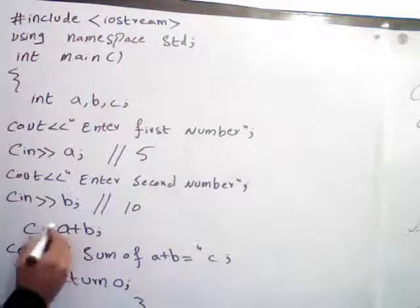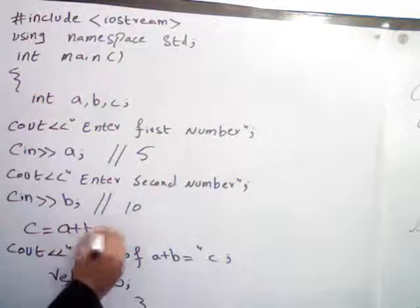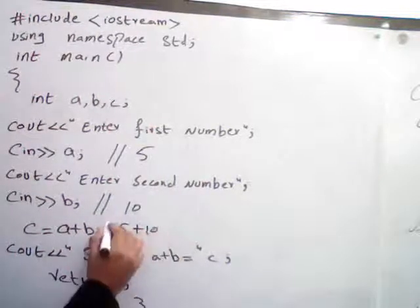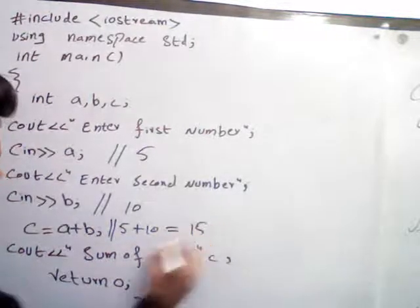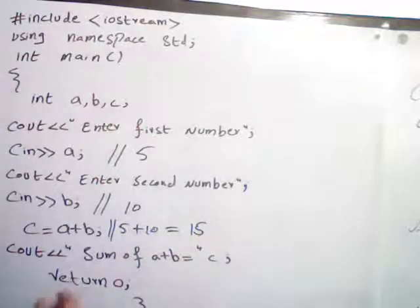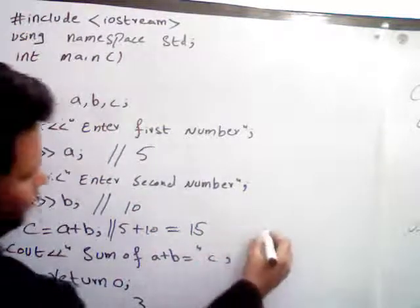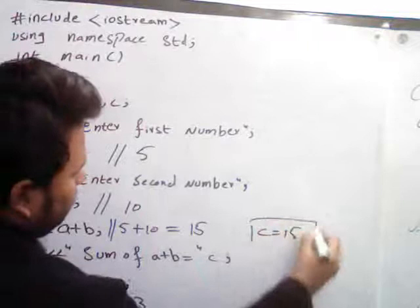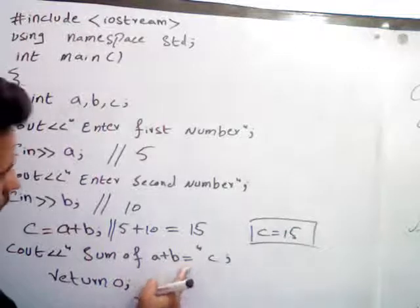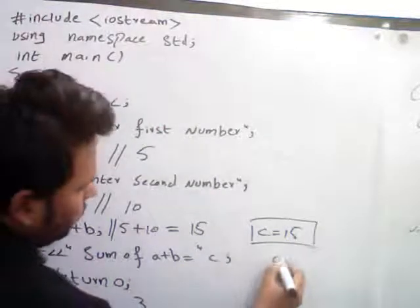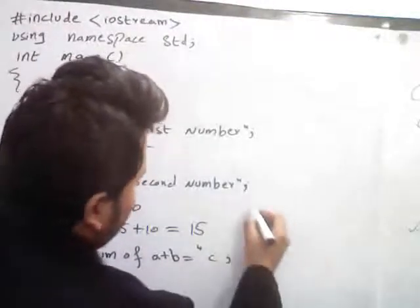Console output to read: enter first number is 5, enter second number is 10. So the message is printed out: sum of a plus b equals 15. So this is your output. Thank you so much.